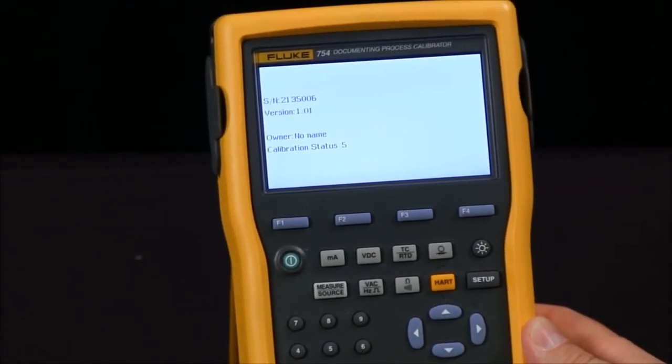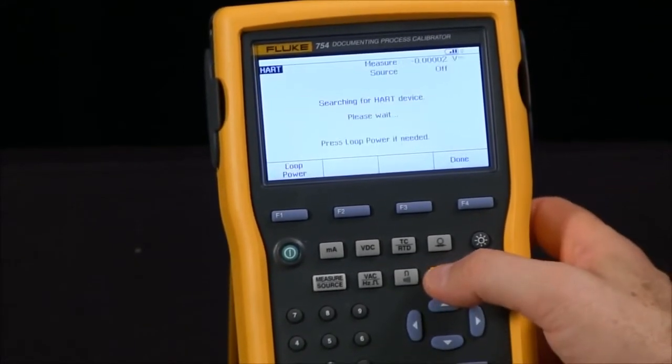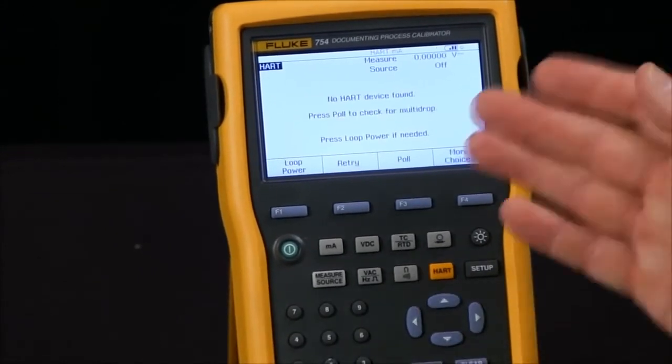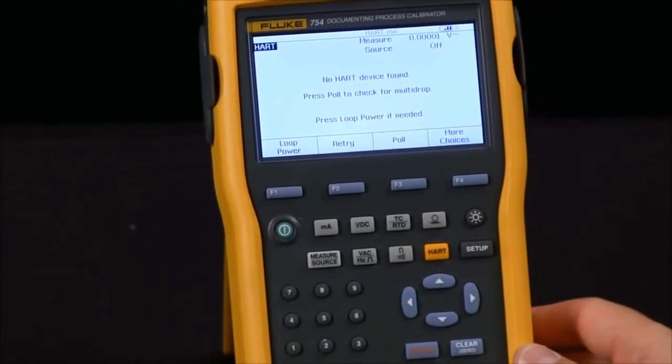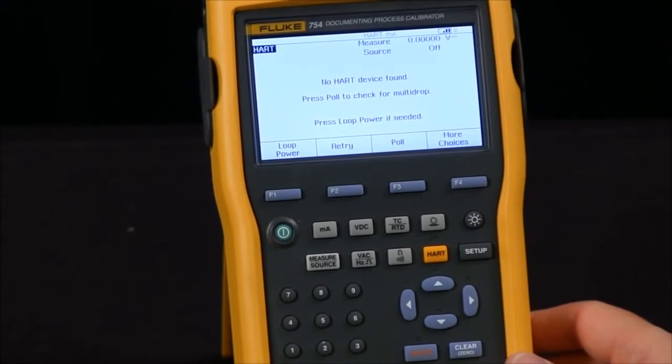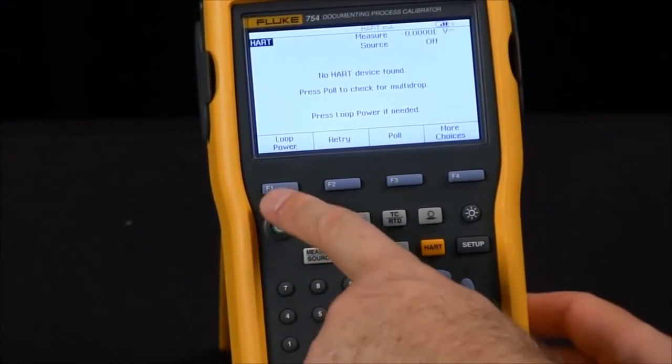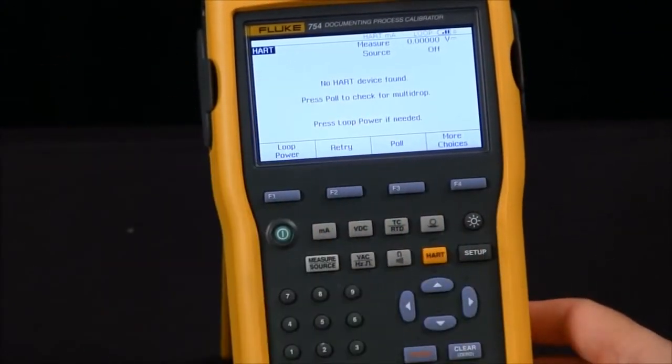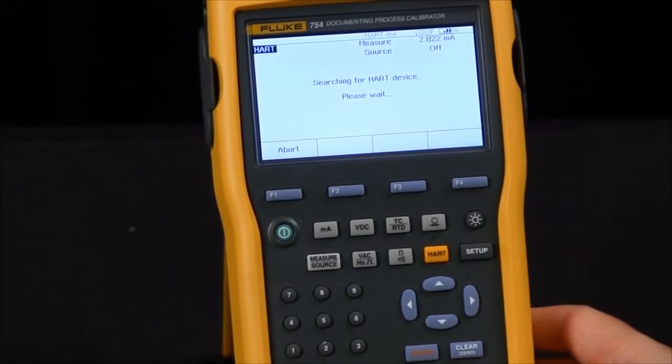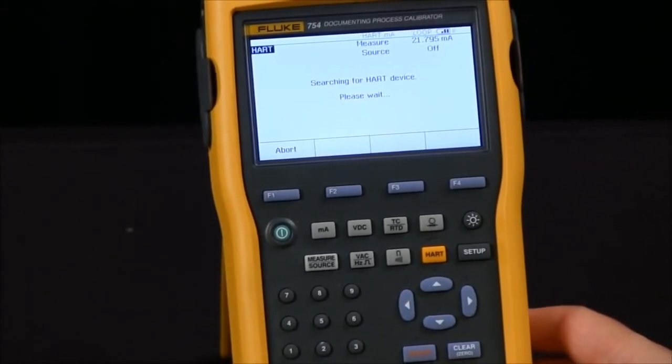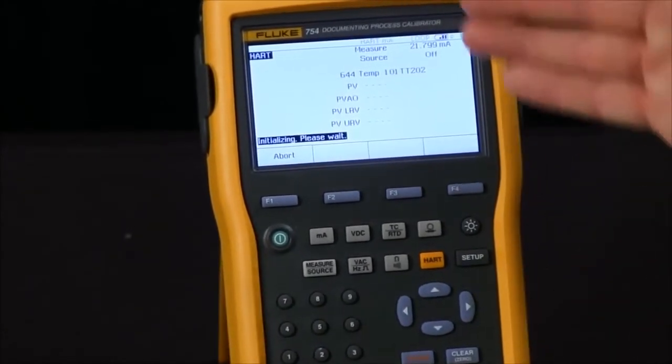Now I'm going to hit the HART communication device. You see I'm expecting an error message because it went out there and says searching for HART device and none found, but it does give me an option on the F1 key to turn on loop power. I will do that and then once again it will go out and look for the HART device and we'll see that it has found it.